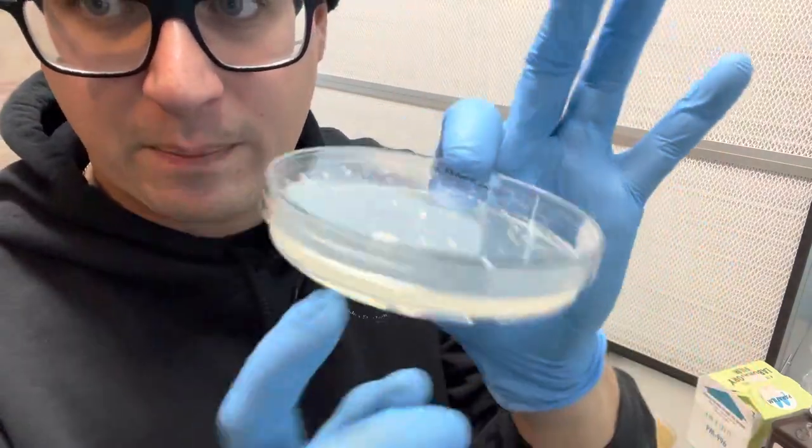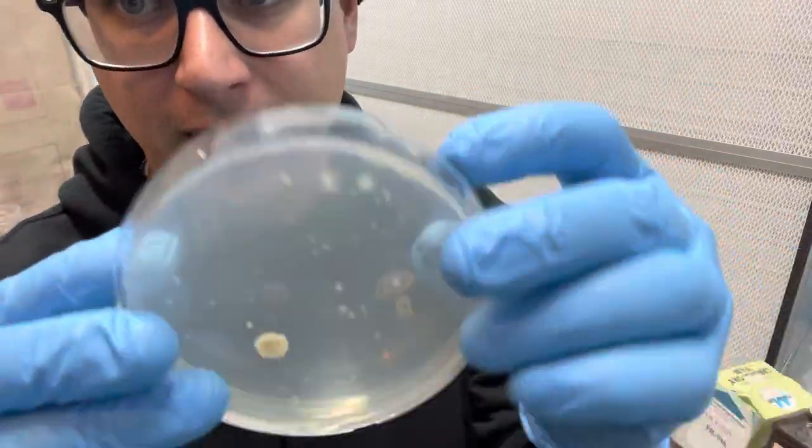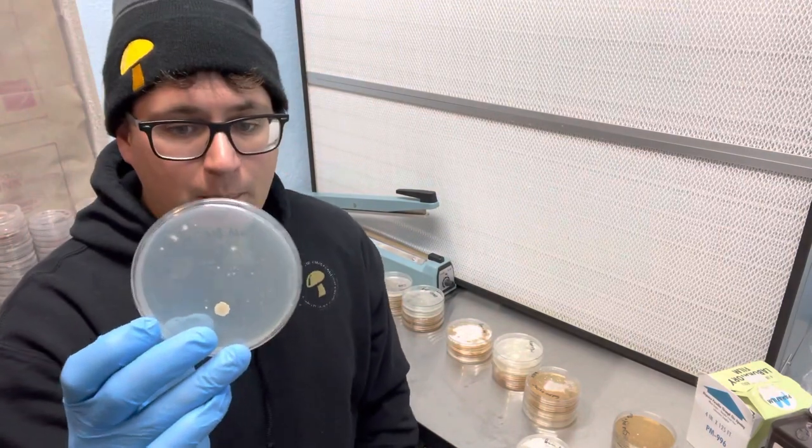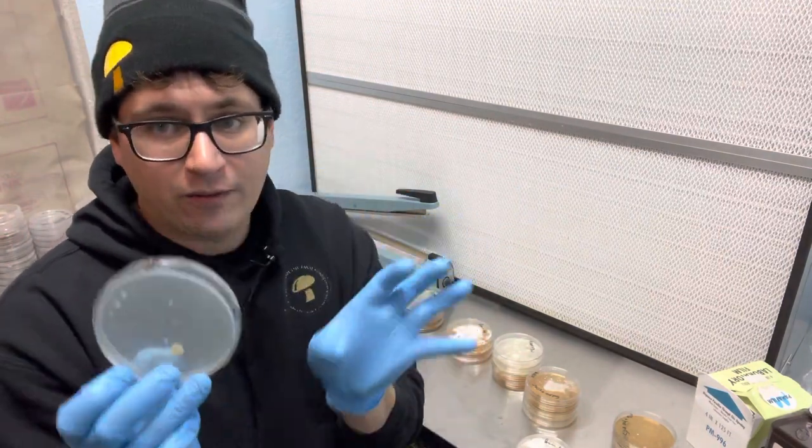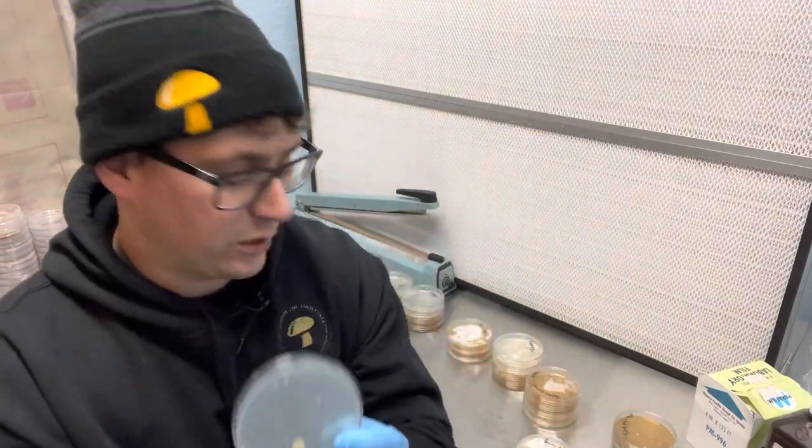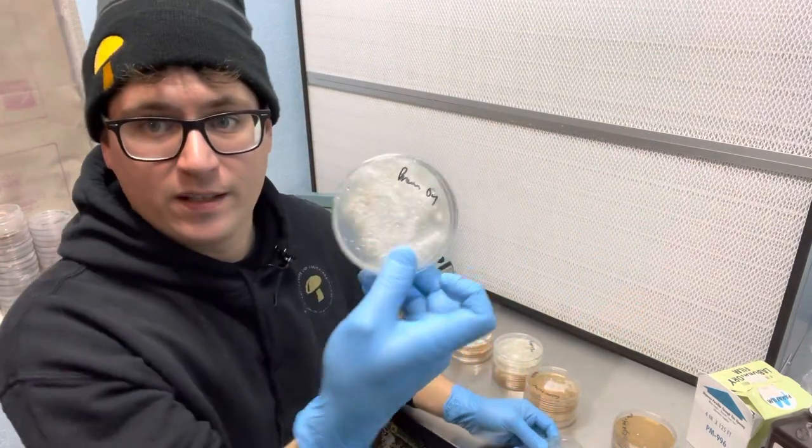These spores had just appeared about eight hours prior, so it took about 14 days for these spores to germinate. But in about a week from now, all of that mushroom mycelium is going to overtake this petri dish, just like this brown oyster here.